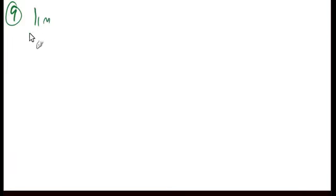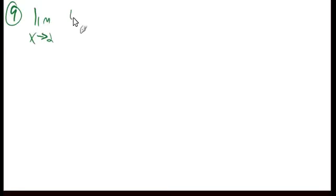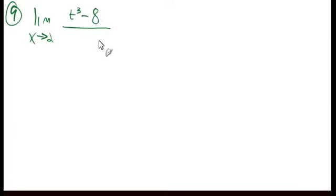All right, we're going to start with number 9. Number 9 wants us to find the limit as x approaches 2 of t cubed minus 8 over t minus 2.